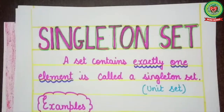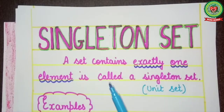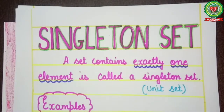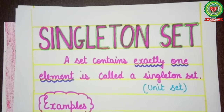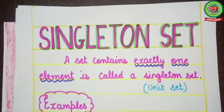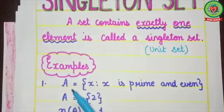What do you mean by a singleton set? A set that contains exactly one element is called a singleton set. As you know, one is known as a unit, therefore this set is also known as the unit set. Let's understand with examples.